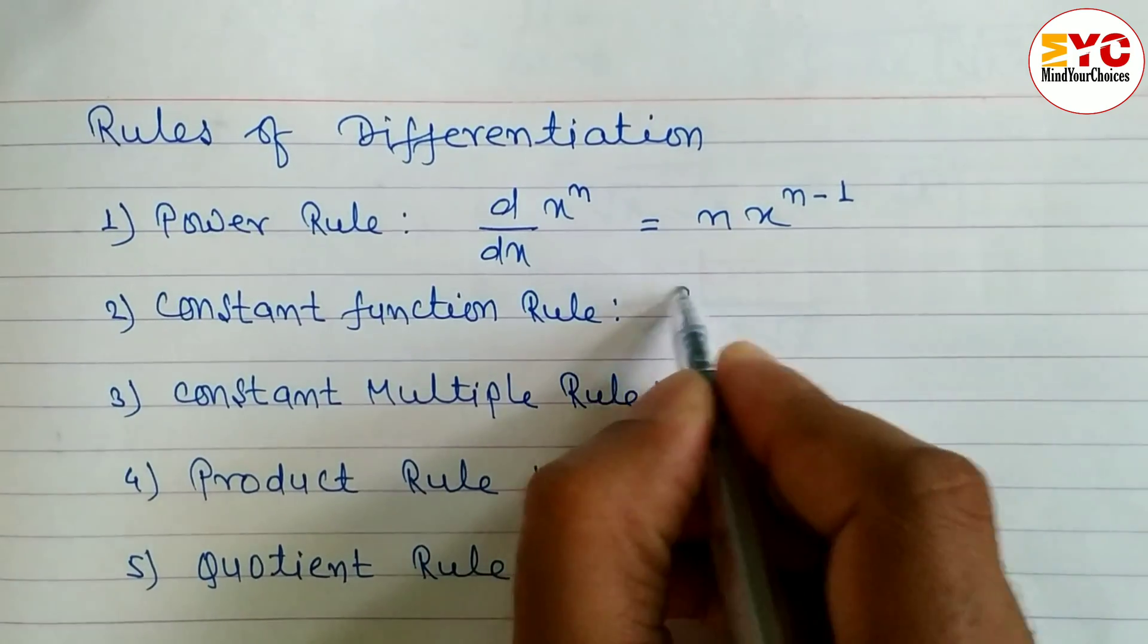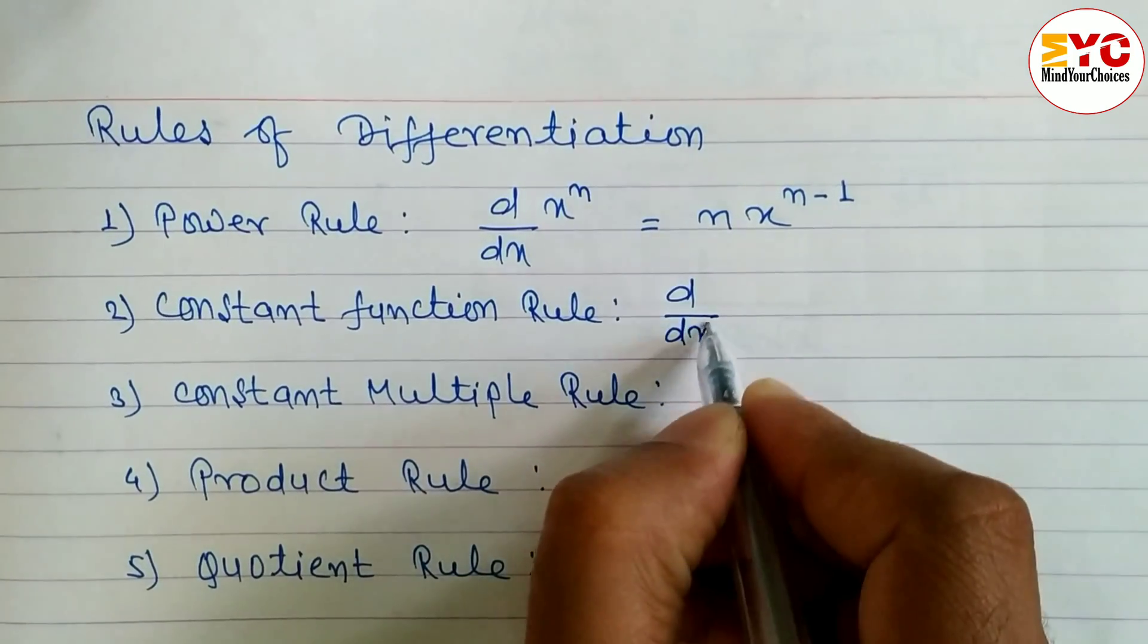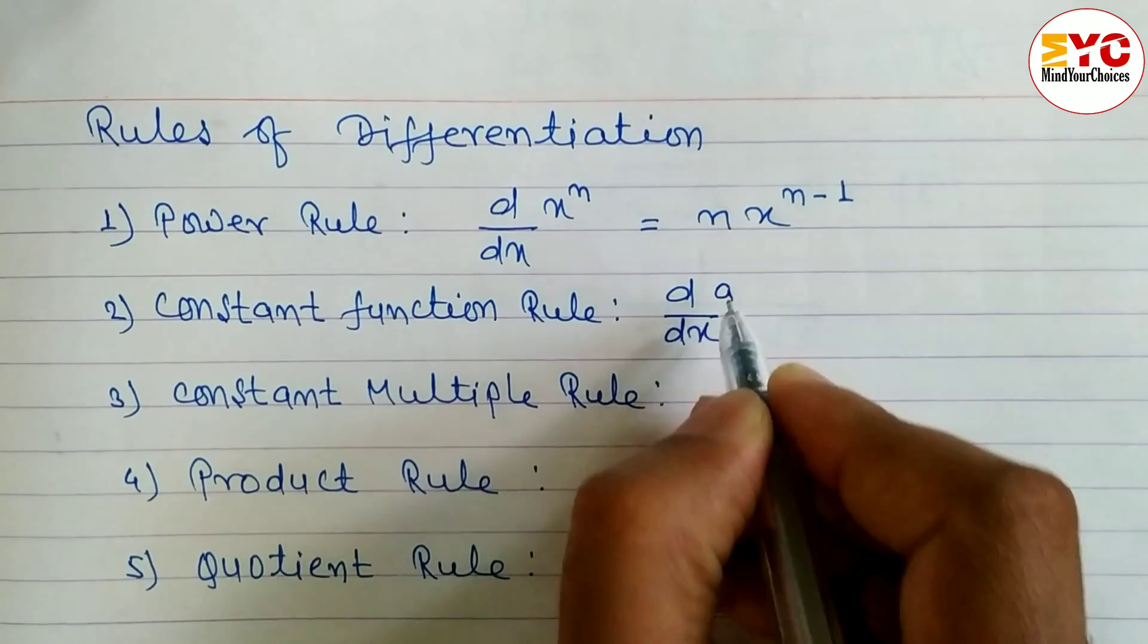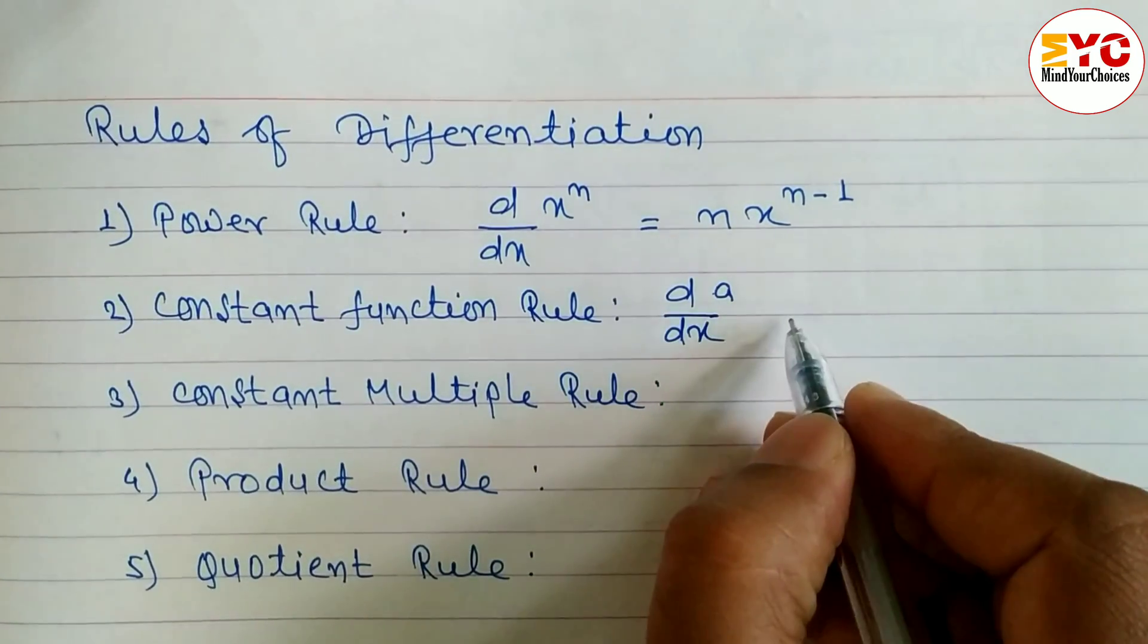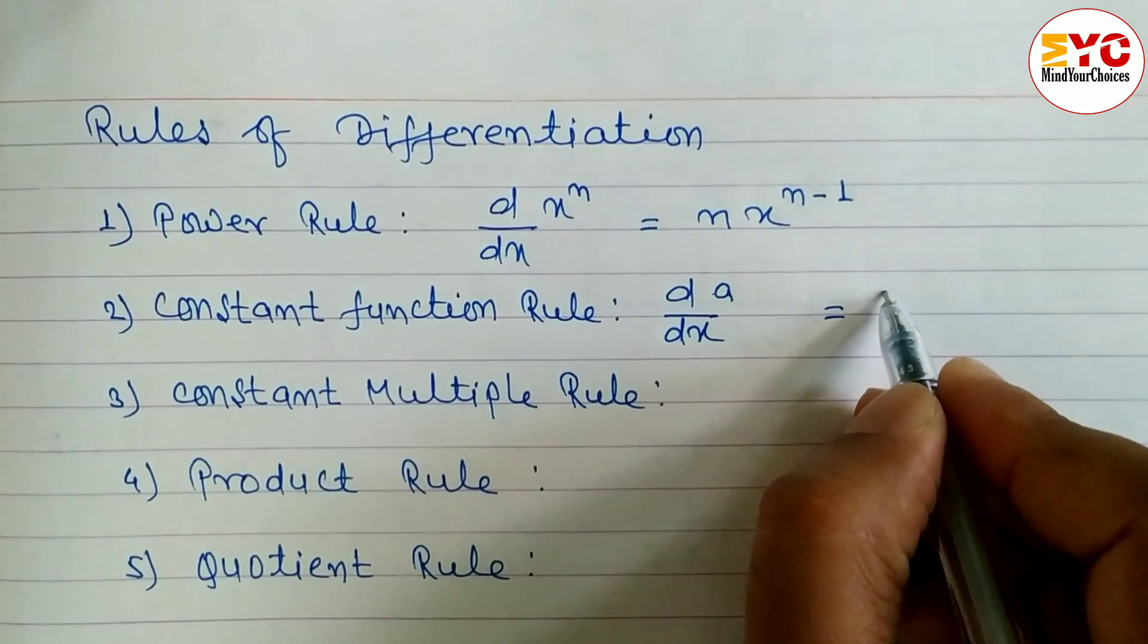Next is the constant function rule. The derivative d/dx of any constant number a, or any constant like 2, 3, or 4, is always equal to 0.